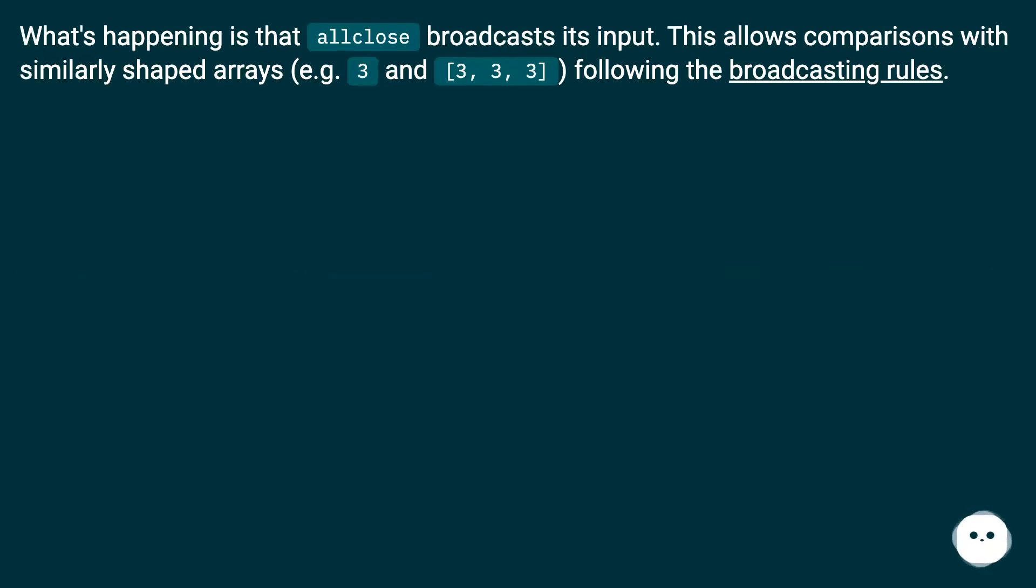What's happening is that allclose broadcasts its input. This allows comparisons with similarly shaped arrays, e.g. 3 and (3,3,3), following the broadcasting rules.